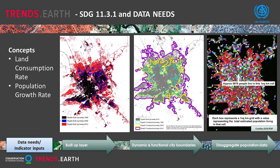The land consumption component of the indicator is computed by taking the natural logarithm of the urban extent for one year divided by the urban extent in the prior period — for example, the area of Riyadh in 2000 divided by the area in 1990. This gives an annual growth rate. For example, Riyadh might have grown by 0.1% over the 10 years between 1990 and 2000, and we calculate that as an annual growth rate.